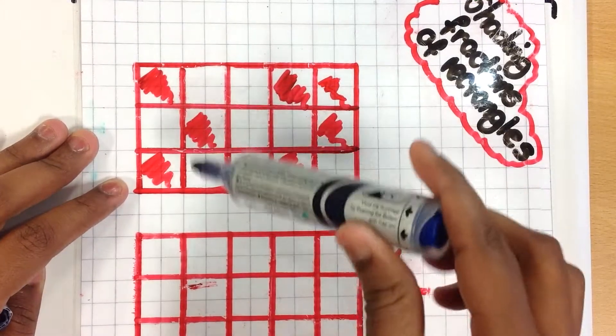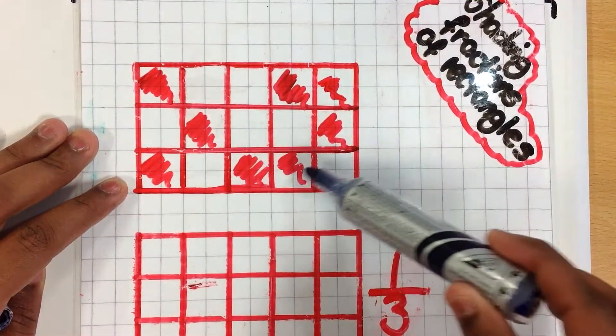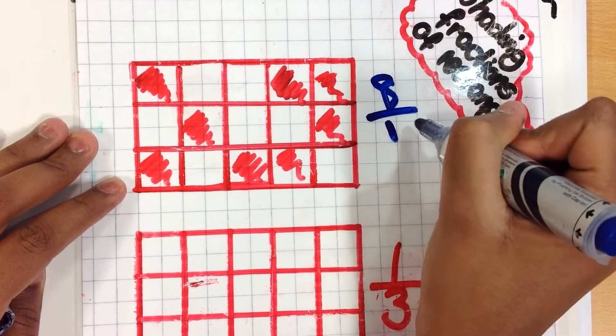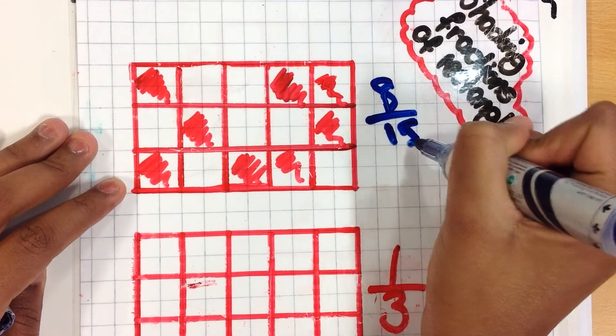So now you have to find out how many are shaded. 1, 2, 3, 4, 5, 6, 7, 8. So 8 over 15 is shaded.